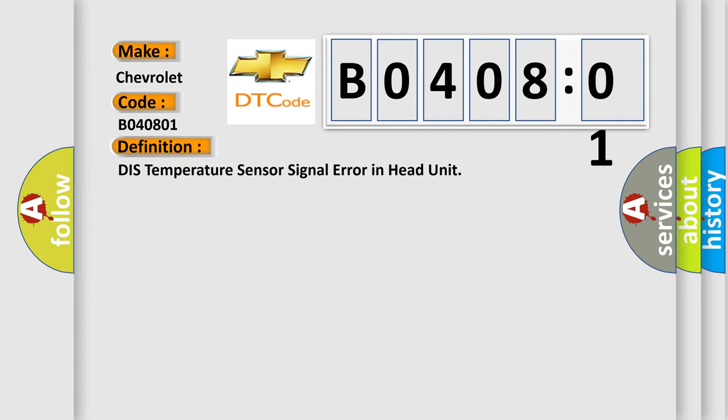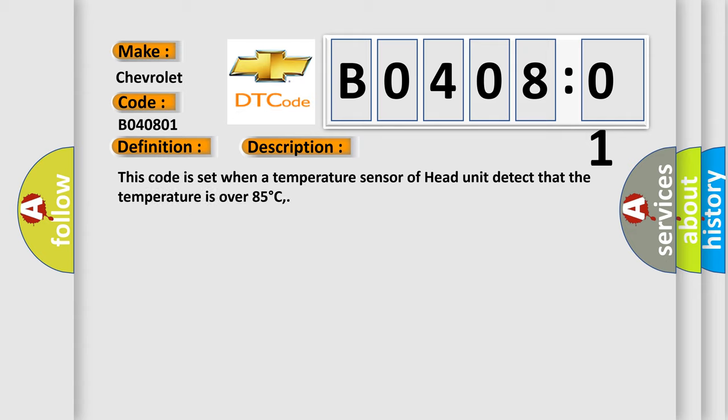The basic definition is: temperature sensor signal error in head unit. And now this is a short description of this DTC code. This code is set when a temperature sensor of head unit detects that the temperature is over 85 degrees Celsius.